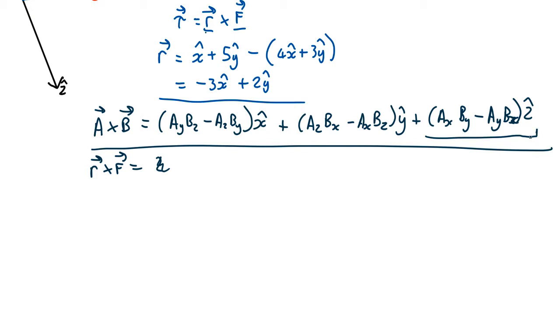So we want a_x, a is the first term r, so it's the x component of r which is minus 3 times the b component of the force which is 1 minus a_y minus 2 times 4, all times z.